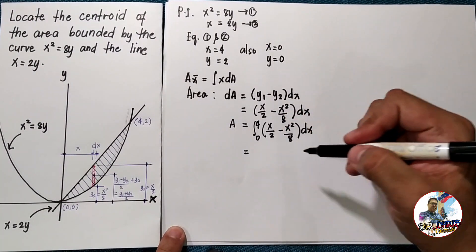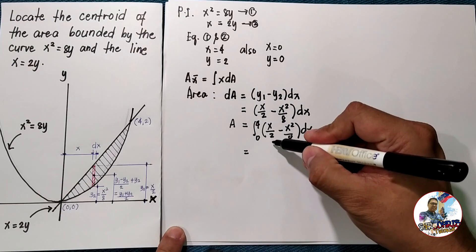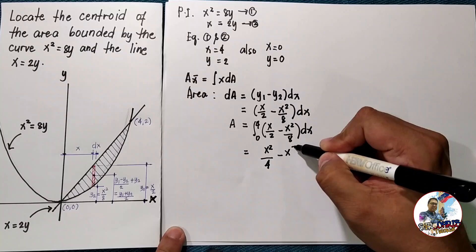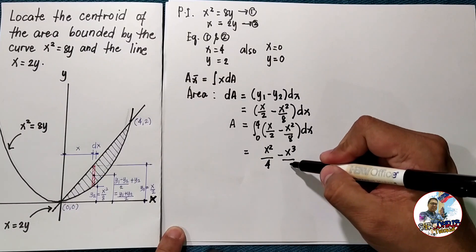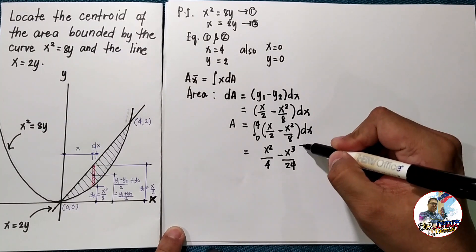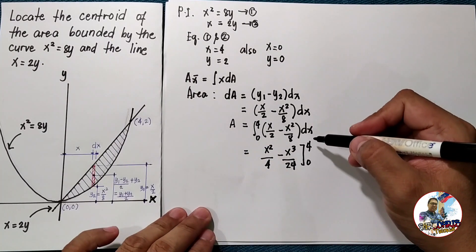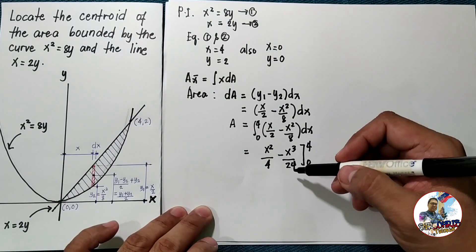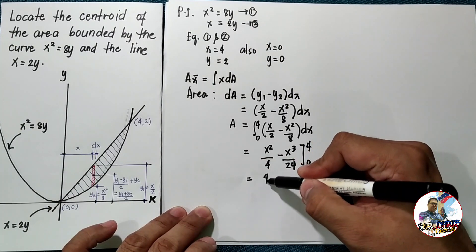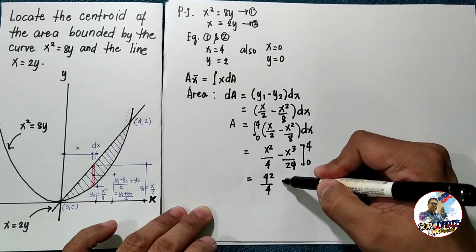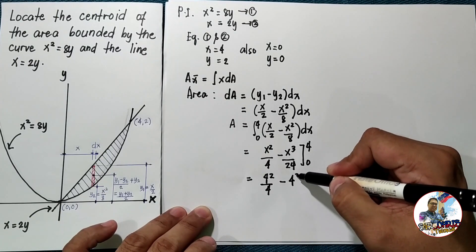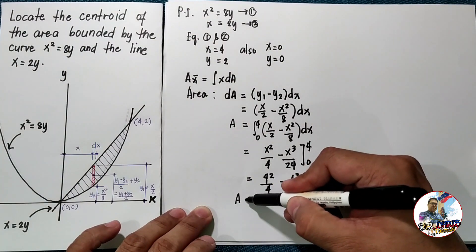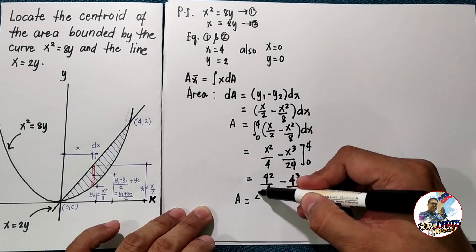Evaluating the integral: A = [x²/4 − x³/24] from 0 to 4. Substituting the limits gives 4²/4 − 4³/24. Therefore the area A = 4/3.